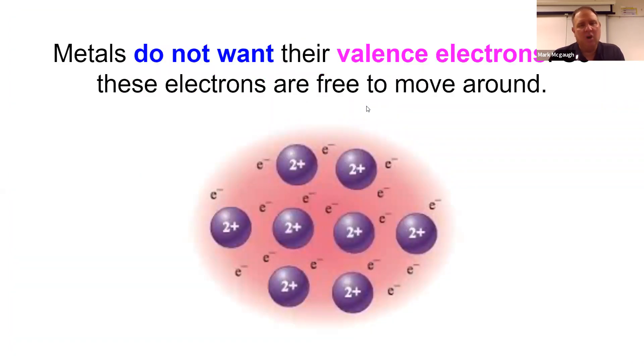But we do need to know why metals have the properties they do. Metals don't want their valence electrons. They want to get rid of them so they can have eight in the outer shell. Well, metals only have one or two electrons in their outer shell, so they want to get rid of them.